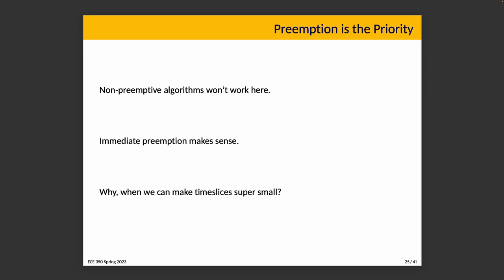Why not just make time slices super small instead of using preemption? Two reasons: sometimes required response time is in the order of microseconds or milliseconds with big consequences for being late. Also, cranking up timer interrupts means more CPU time spent handling those interrupts and less time doing actual work — losing a significant proportion of CPU time to overhead.